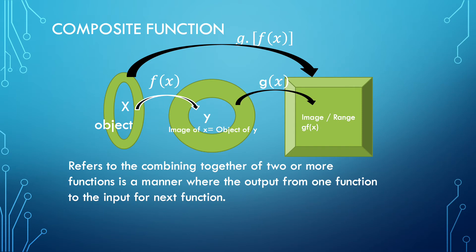What is Composite Function? Composite Function refers to the combining together of two or more functions in a manner where the output from one function becomes the input for the next function. From the diagram given,